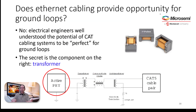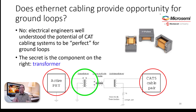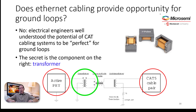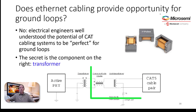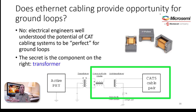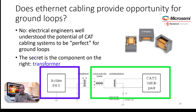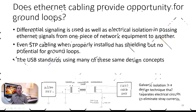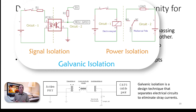Now look at my diagram. You'll see Active PHY — think of that as my switch, my network card, my router, and all the electronics that run that device. Over here I've got my CAT5 cable pair. Notice that in between those two — between one pair of CAT5, CAT6, or CAT7 and my device's electronics — I've got the transformer. It isolates the two electrically apart, so anything on the cable will never touch the electronics in the network, in your switch, or in your router.